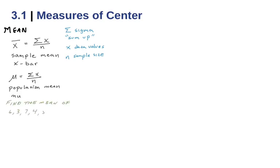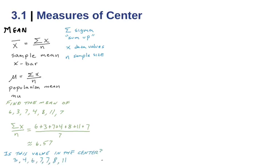For example, if we wanted to find the mean of these values here, the formula is telling us to add them all up and then divide by how many there are. We're going to get 6.57. So that would be the mean. The question is, is this value in the center? If we arrange these from smallest to largest, is 6.57 somewhere in the middle? It is pretty close to right in the center, so this would be a good measure of center.